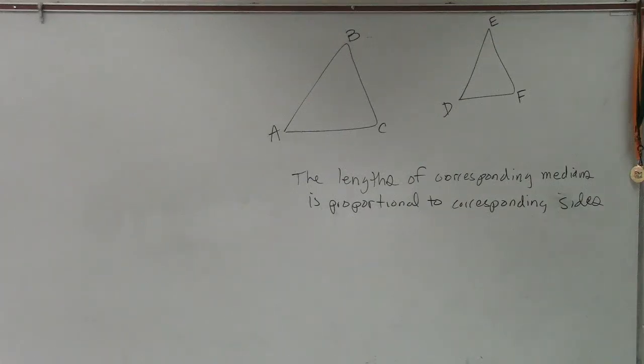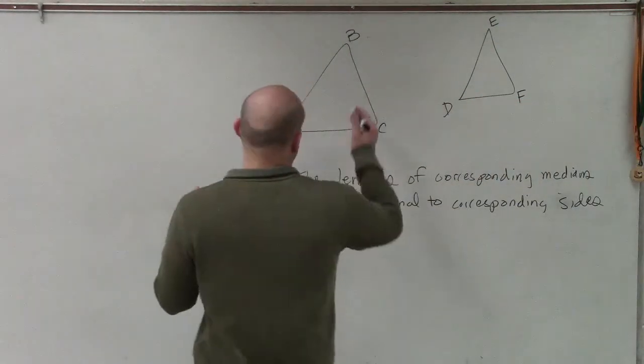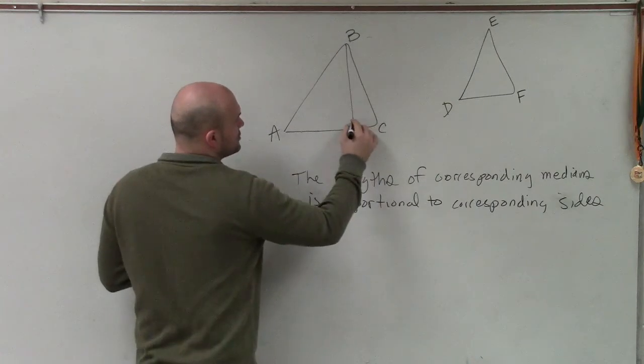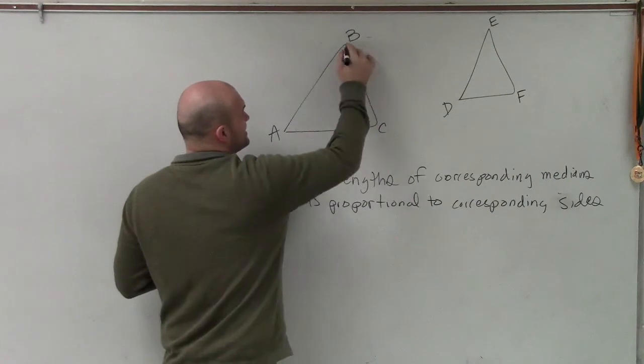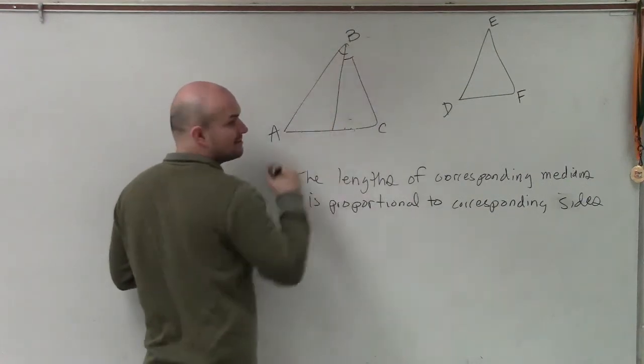The lengths of the medians. So far we've talked about the altitude, which looked like that, and then we talked about an angle bisector that looked like that.